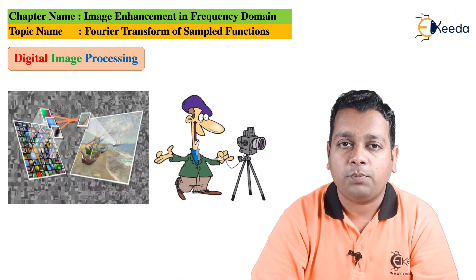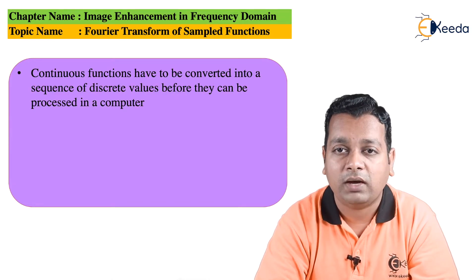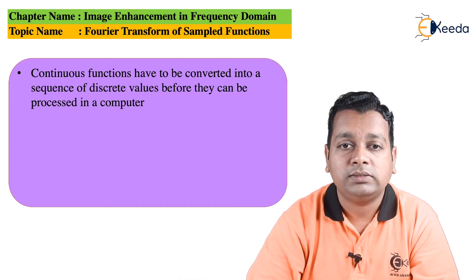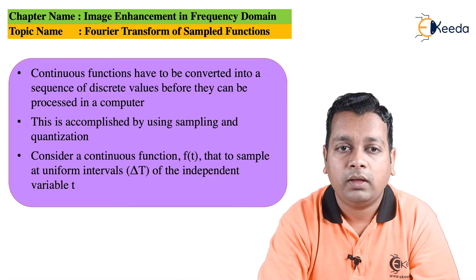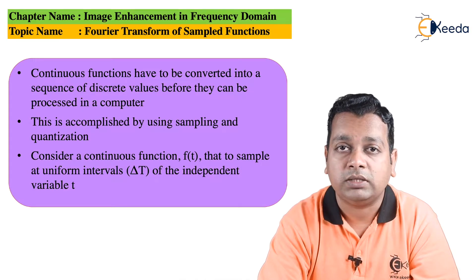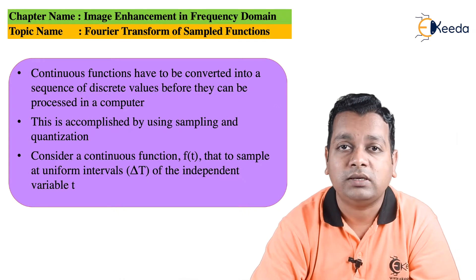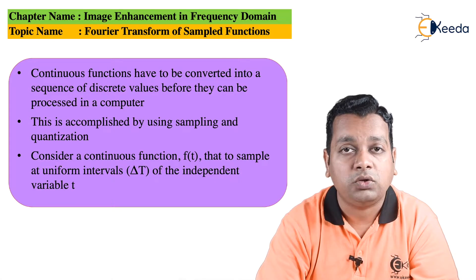The Fourier transform of sampled functions: continuous functions have to be converted into a sequence of discrete values before they can be processed by a computer. This is accomplished by two tasks — sampling and quantization. We consider a uniform function represented as f(t), where f represents intensity or amplitude level and t represents the value on the horizontal axis, generally the time domain. This continuous-time signal must be sampled at uniform intervals.